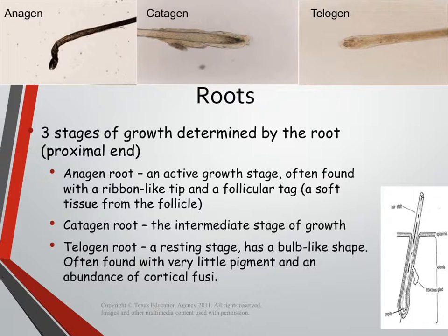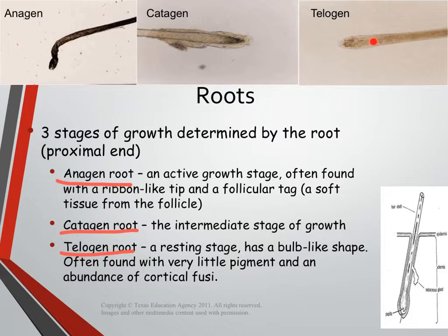The second stage is called catagen, or catagen growth, and this is your intermediate stage of growth. The last stage is called the telogen root — this is what we call the resting stage. In this stage, your root tends to have a bulb-like shape. Looking at the pictures, the telogen root has very little pigment close to the root itself and a lot of little dark dots called cortical fusi.